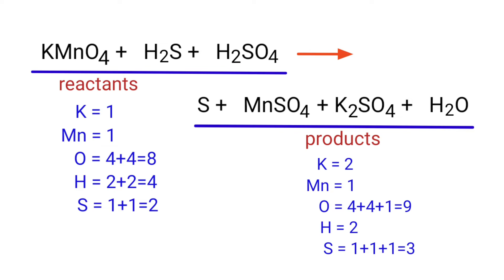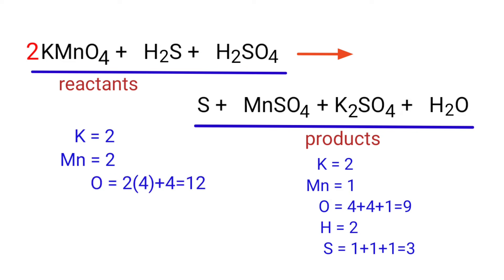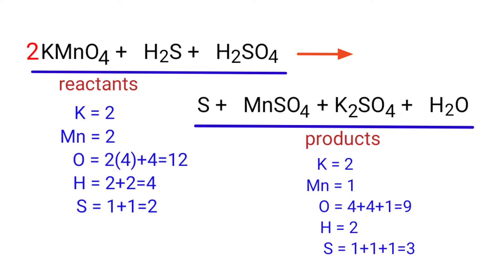In this equation, we need to balance the potassium atoms first. To do this, we need to put a coefficient of two in front of KMnO4. The potassium atoms are now balanced.